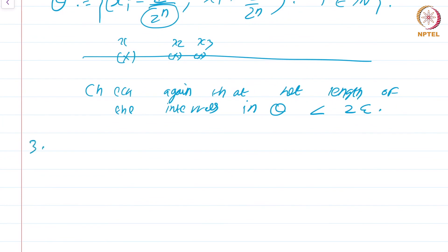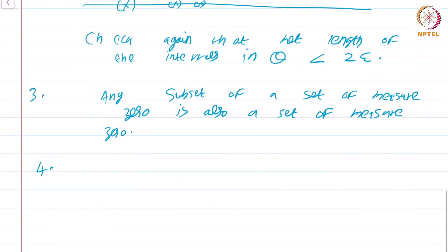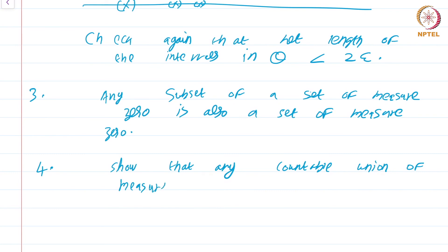Example 3: any subset of a set of measure 0 is also a set of measure 0. This is fairly obvious: given epsilon, you consider the corresponding cover O for the larger set, and the same cover works for the smaller set. Example 4 is an exercise: show that any countable union of measure 0 sets is also measure 0. If you take small sets and take countably many of them, you will still get back a small set.